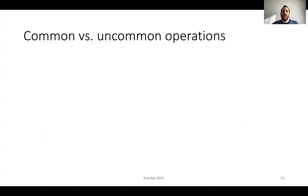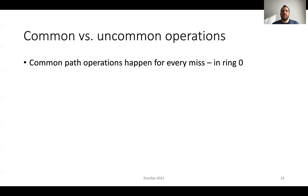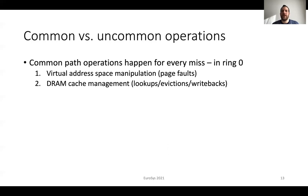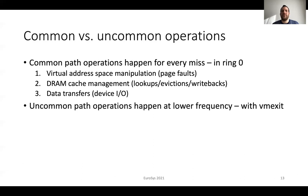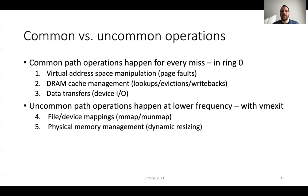We categorize storage cache management operations into common and uncommon path operations. Common path operations happen for every miss and are handled in ring 0. These operations include virtual address space manipulation that happens with page faults, DRAM cache management to check if the page already exists in DRAM and also handle evictions and writebacks, and data transfers between DRAM and storage devices. Uncommon path operations happen at a lower frequency but require a VM exit. These include management operations such as file or device mappings with mmap and munmap system calls, and physical memory management including dynamic resizing of the DRAM cache. Both of these mainly happen during application initialization and do not change for large periods of time. In Akila, common path operations do not require a protection domain switch, resulting in less cost in the common path. Uncommon path operations with a VM exit are heavier than before, but this is not an issue as they happen at a lower frequency.